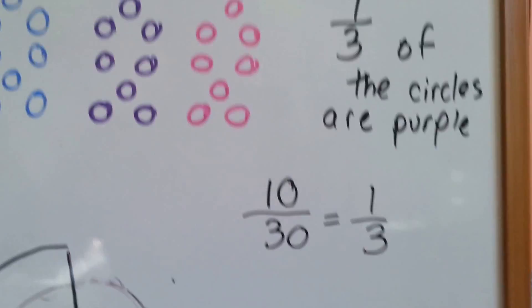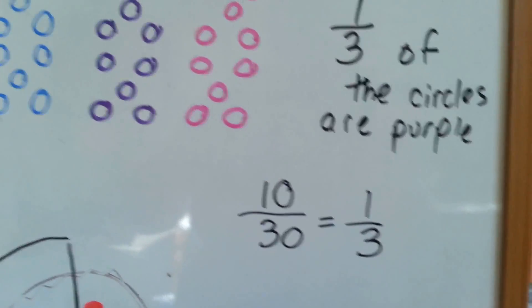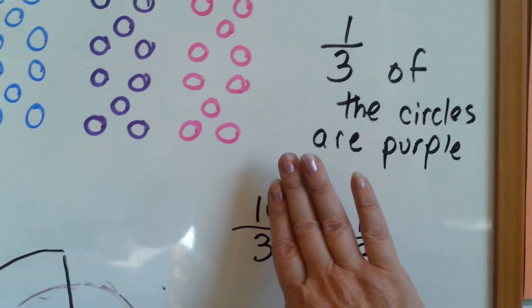That's an equivalent fraction. In fact, when they end with a zero, look at that. You cover up the zeros, and it looks like one-third, doesn't it?